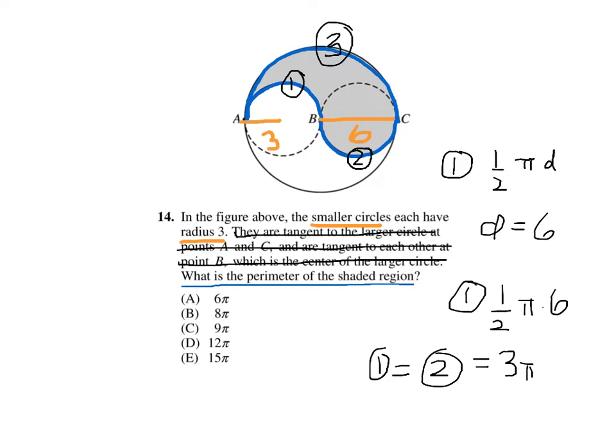Number three. One half pi times capital D. I'm using capital D because it's a bigger diameter. Capital D here is 12. And so this is going to equal one half pi times 12, which is, of course, 6 pi.